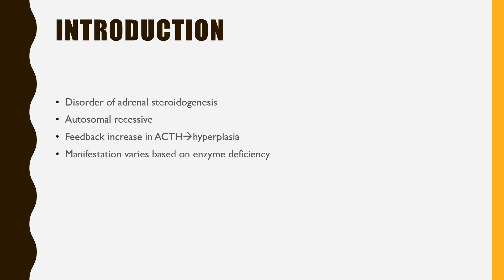Congenital adrenal hyperplasia is a disorder of adrenal steroidogenesis. The steroids are not formed. As cortisol is not formed, it provides a feedback mechanism to the pituitary asking it to increase ACTH secretion. Once ACTH, adrenocorticotropic hormone, increases in secretion, it causes hyperplasia of the adrenal gland — hence congenital adrenal hyperplasia. It is secondary to deficiency of cortisol which stimulates ACTH.